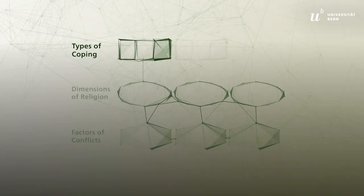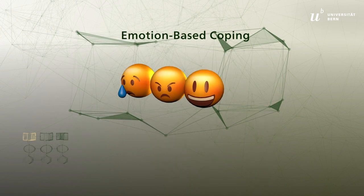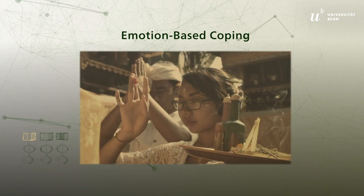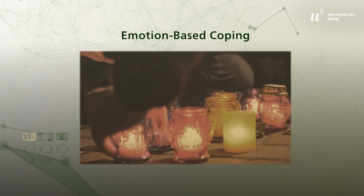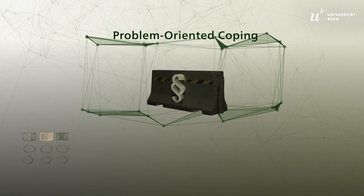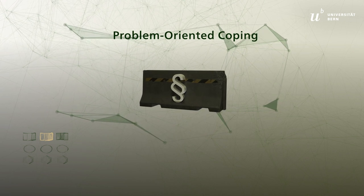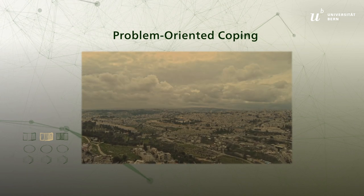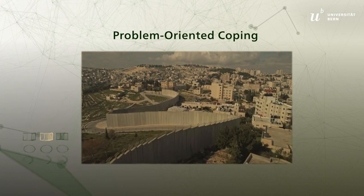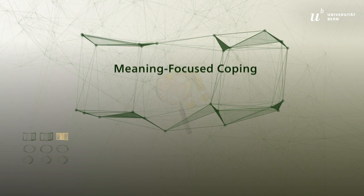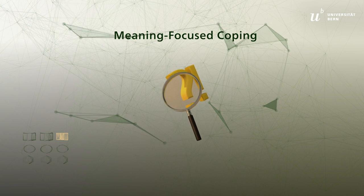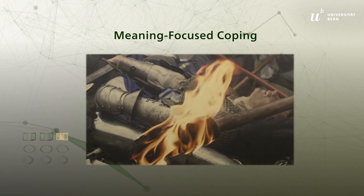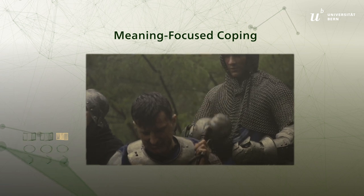A distinction is usually made between three different types of coping. Emotion-based coping strives to change the emotional relationship with an unchangeable situation — for instance, when commemoration ceremonies are held for victims of acts of violence. Problem-oriented coping is targeted at changing the structures and conditions that are causing a given conflict. With regard to the Israel-Palestine conflict, you can think of negotiations and agreements on land sharing and access to water. Meaning-focused coping aims to alleviate harm or suffering through cognitive re-evaluation of a situation. A typical example is people of faith seeing and accepting an event as God's will.